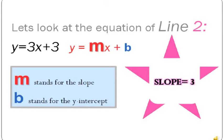Let's look at the equation for Line 2. The equation of Line 2 is y equals 3x plus 3, which is in slope-intercept form. M stands for slope and b stands for y-intercept. Because they are parallel lines, they have the same slope, so Line 1 and Line 2 both have a slope equal to 3.